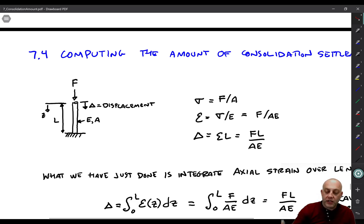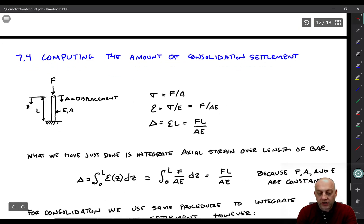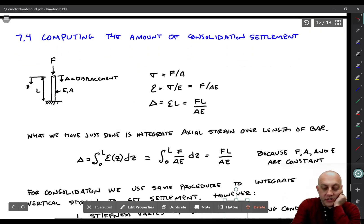And then what you learn in strength of materials is that the displacement is equal to strain times L. So you get FL over AE. So what we've just done is actually integrated vertical strain over the length of the bar. So I want to show you that we've actually solved that integral. The strain doesn't necessarily have to be constant. It can vary with depth. And it does vary with depth for soil.